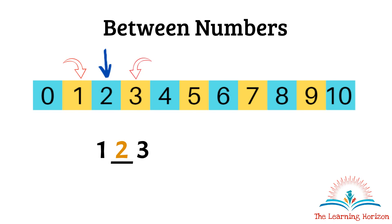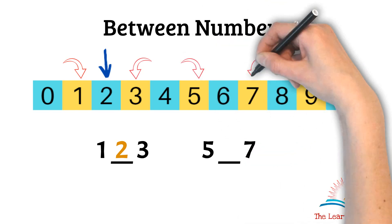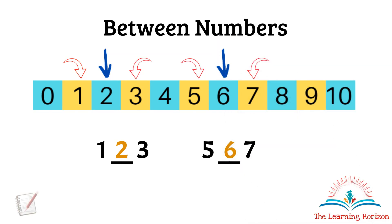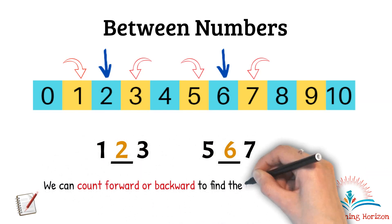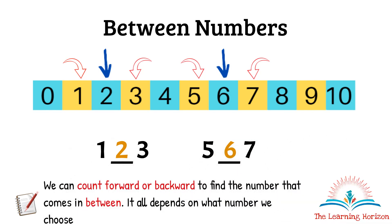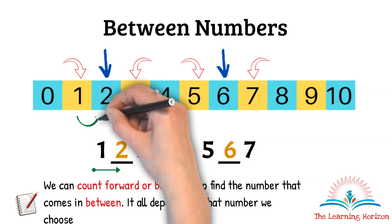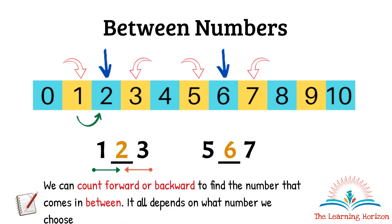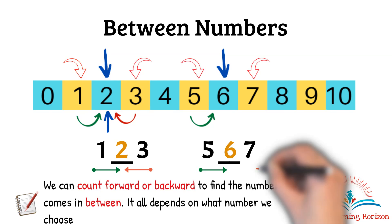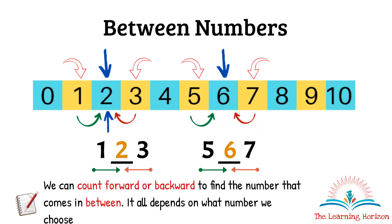Similarly, which is the number that comes between 5 and 7? Here, 6 is the number that comes in between 5 and 7. We can count forward or backward to find the number that comes between — it depends on which number you choose as a reference. If I start counting from 1 I count forward; if I start from 3 I count backward, and both give the result 2. The same applies for 5 and 7.